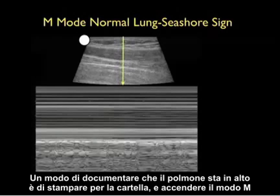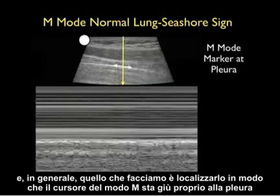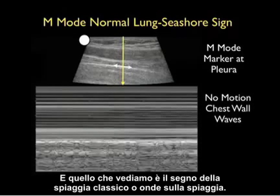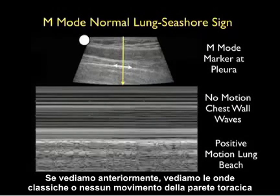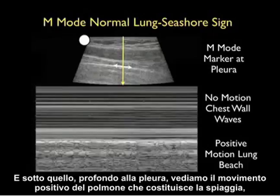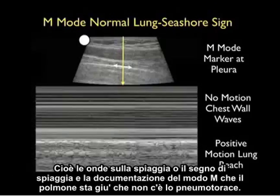A way to document that the lung is up for the chart is to use M-mode. Generally what we do is locate the M-mode cursor right at the pleura. What we see is the classic seashore sign, or waves on the beach. Looking anteriorly, we see the classic waves — no motion of the chest wall — and below that, deep to the pleura, we see the positive motion of the lung making up the beach. So, waves on the beach, or the seashore sign, is M-mode documentation that the lung is up and that there's no pneumothorax.